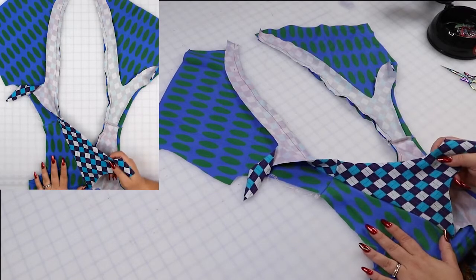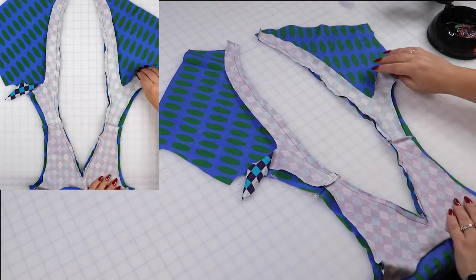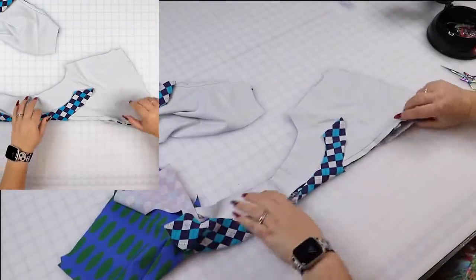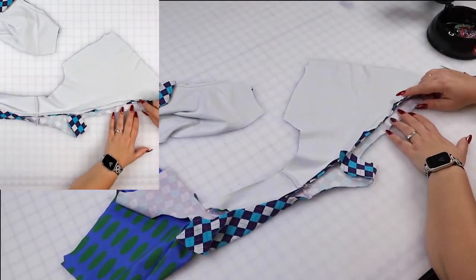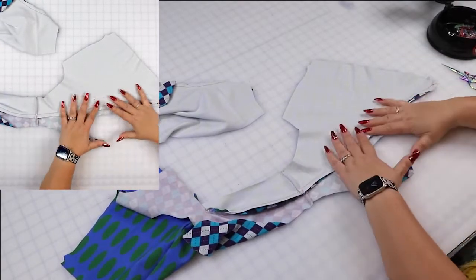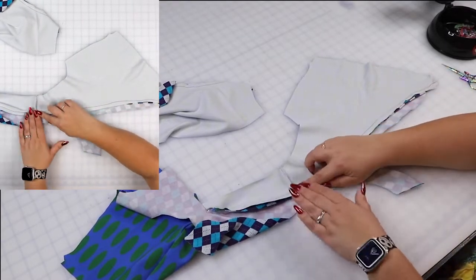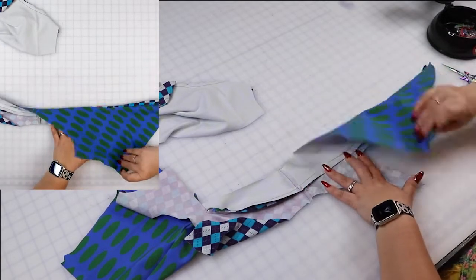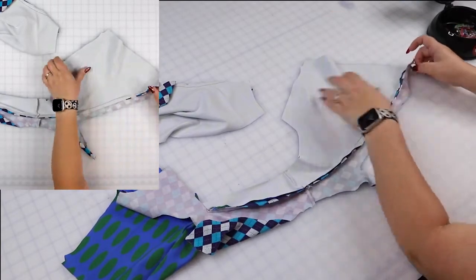Go ahead and understitch your facing. And what does that mean? Understitching means sewing your seam allowance. So this is your seam allowance. You're going to sew it on the facing. So we're not going to top stitch. We're going to understitch to keep the facing away. So I'm going to stitch all around the seam allowance like so, without catching any of the main part. And I will be right back to show you how it looks like.